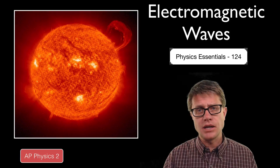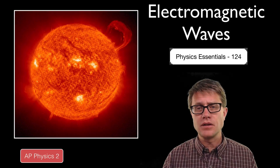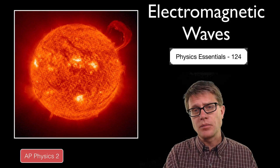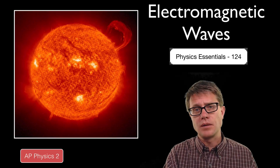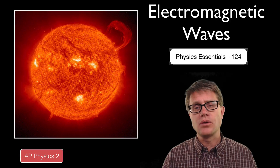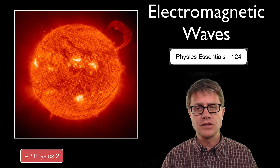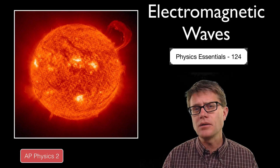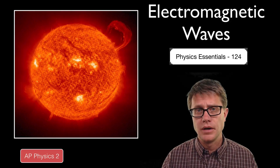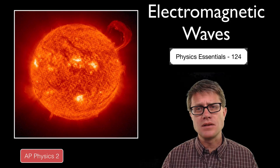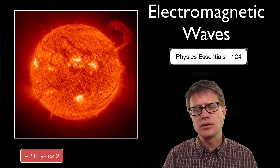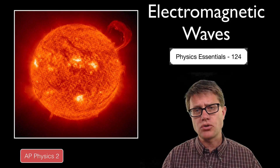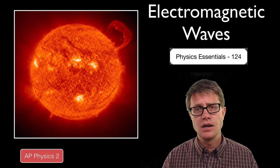Does light make it from the sun to the earth? Of course. And so that means that electromagnetic waves can make it through the vacuum of space. But can you hear the sun? No.